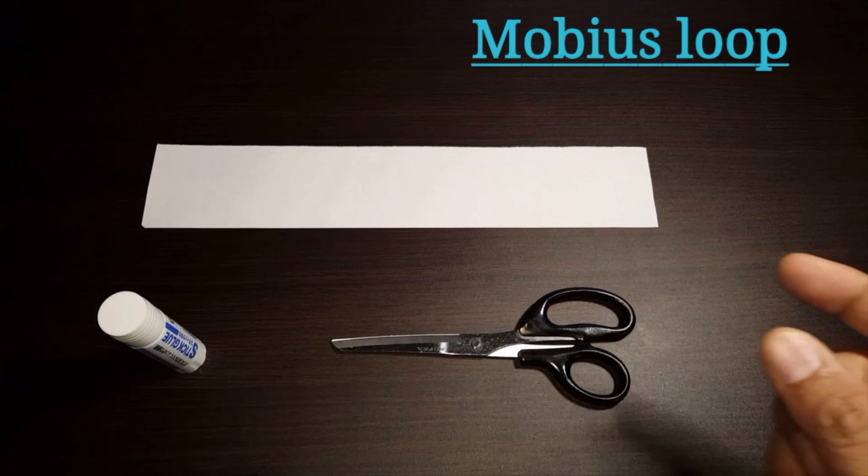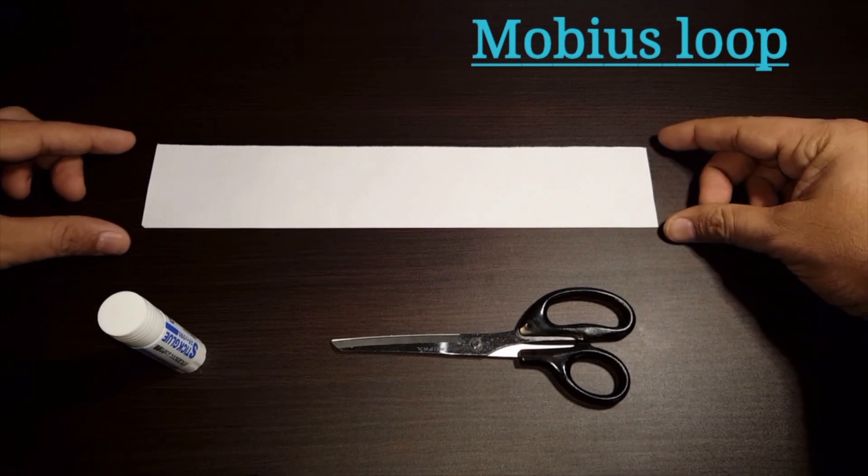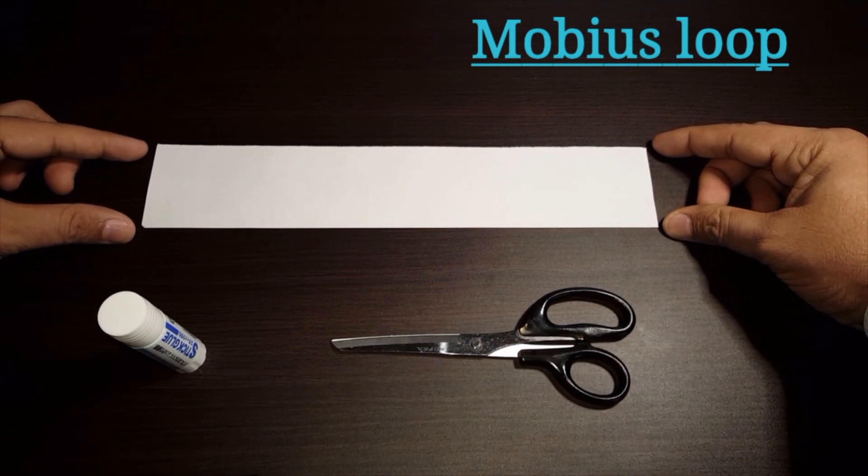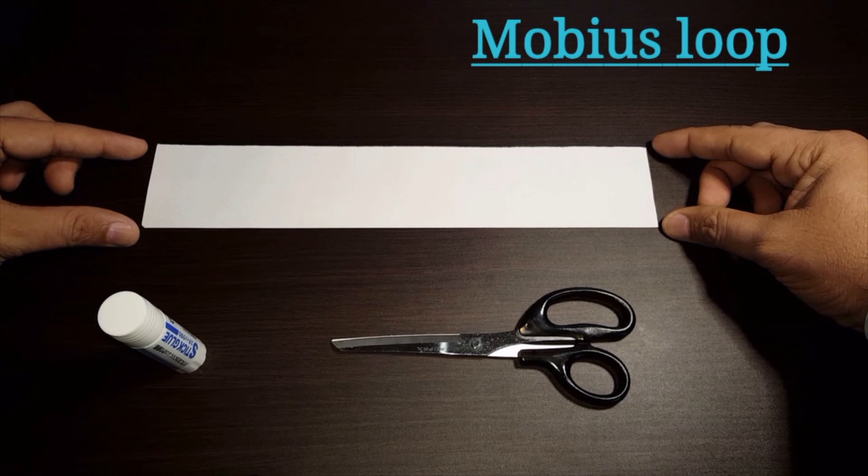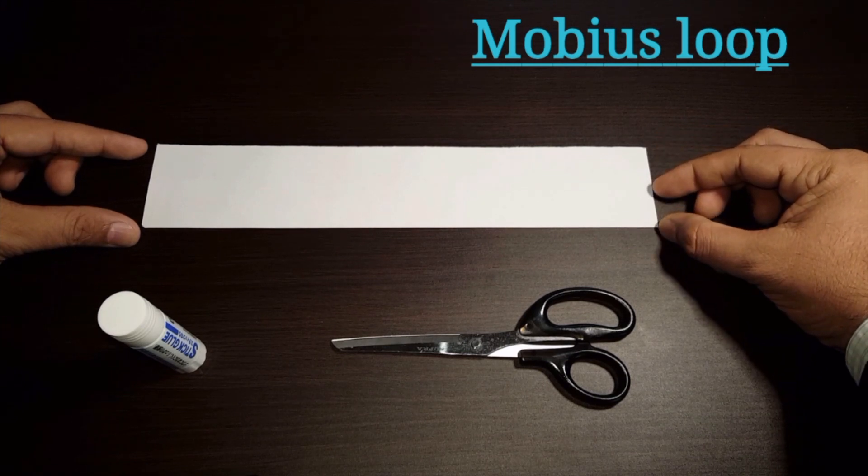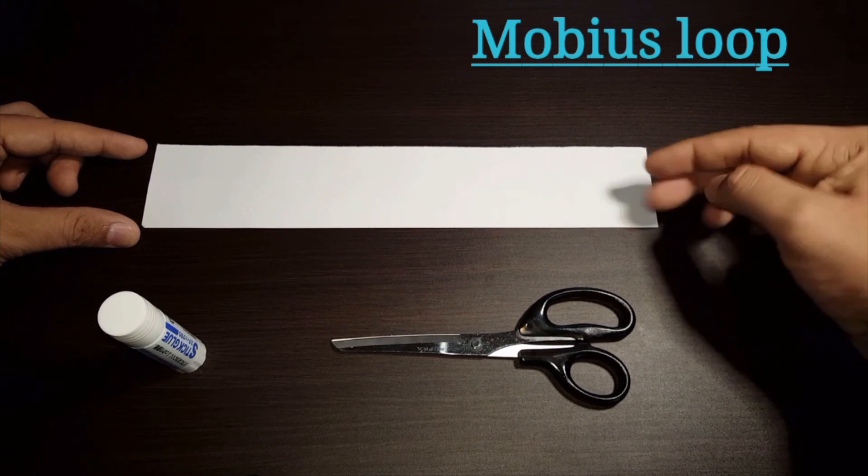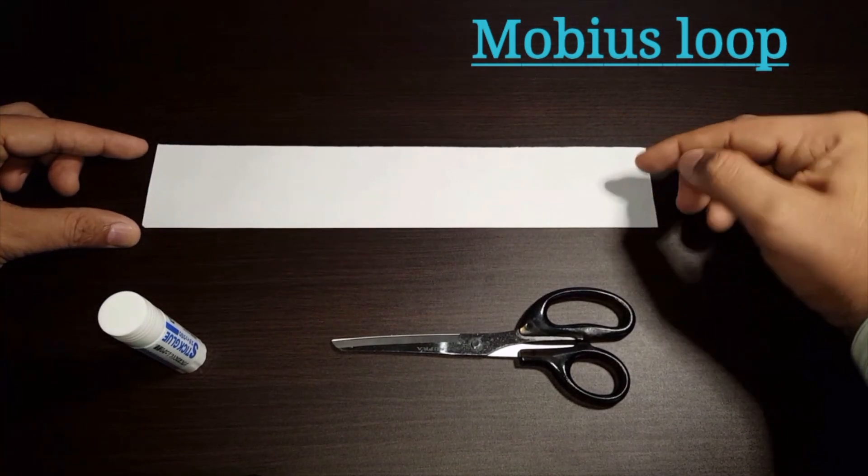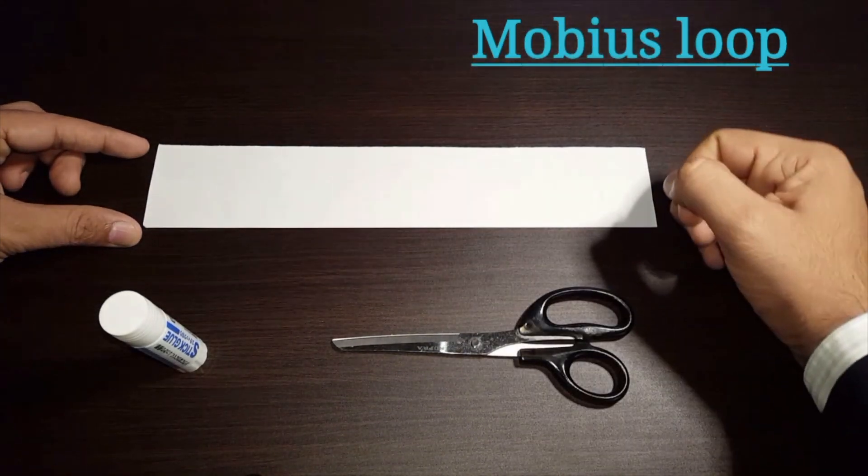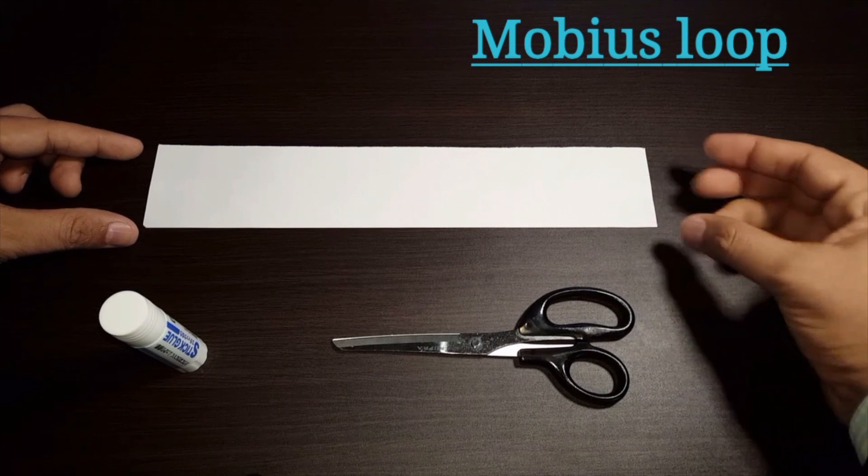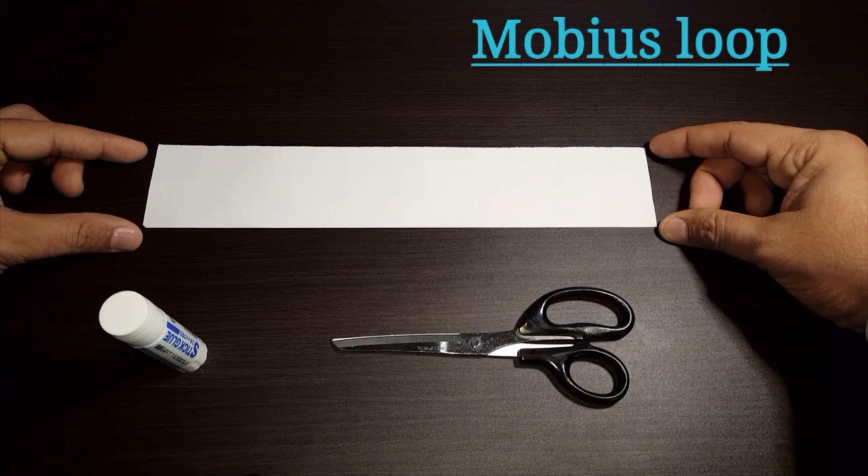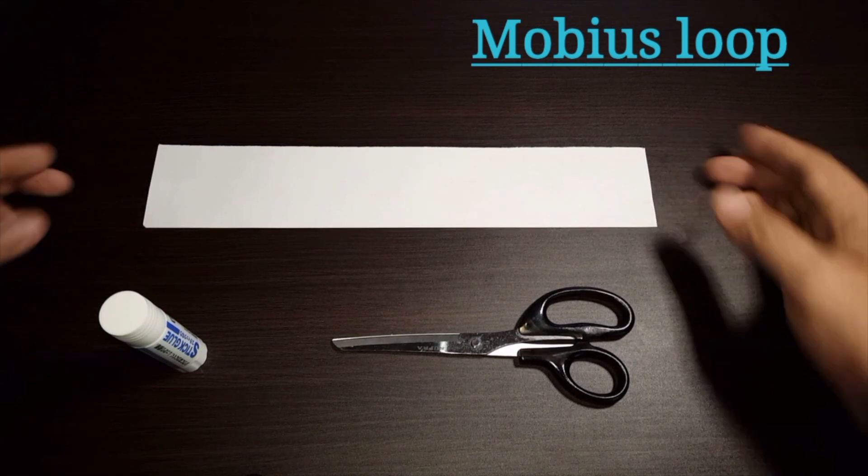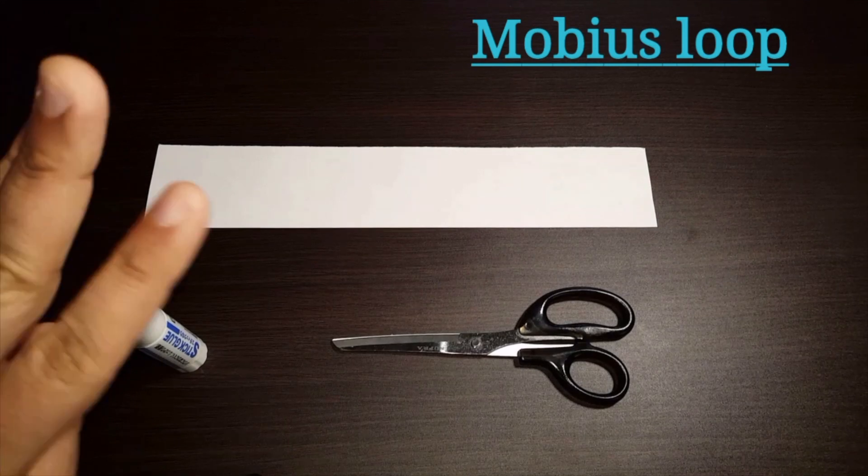As long as it looks like a strip and you have a certain width to it, it's going to do the job. Too thin, maybe the students, the children will not be able to cut through because we need to cut it in the middle, in the latter part. So it needs to have a certain width to it. Okay, so only three things needed.